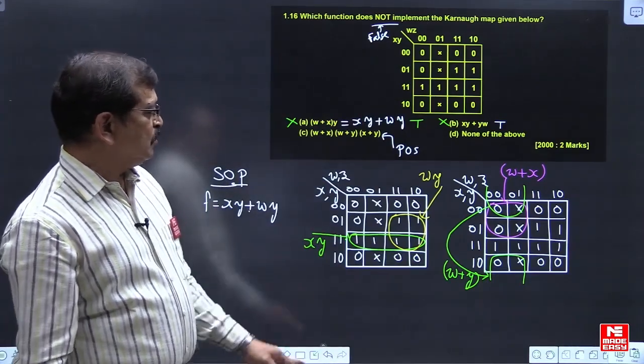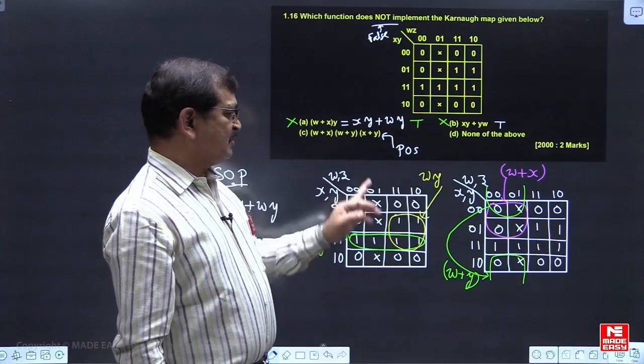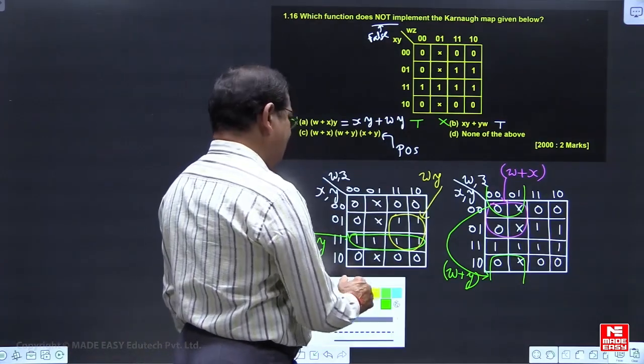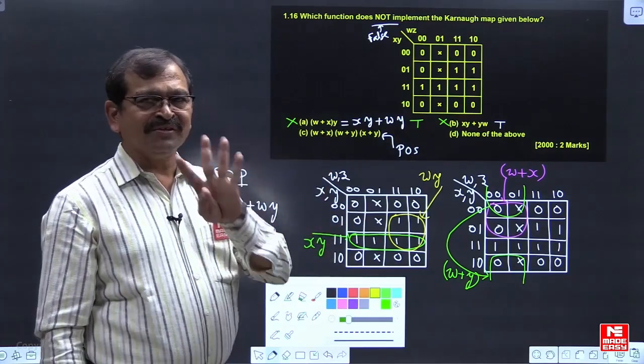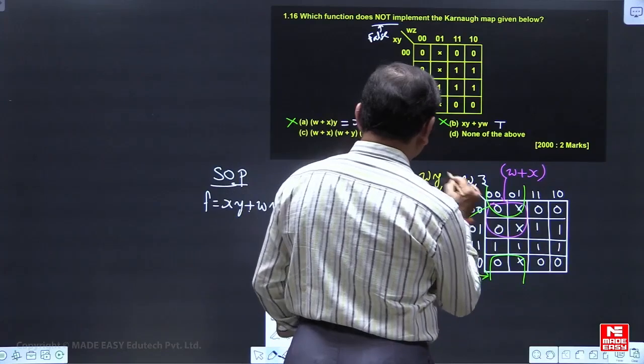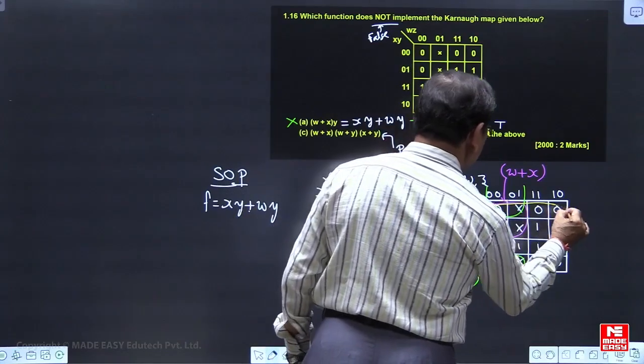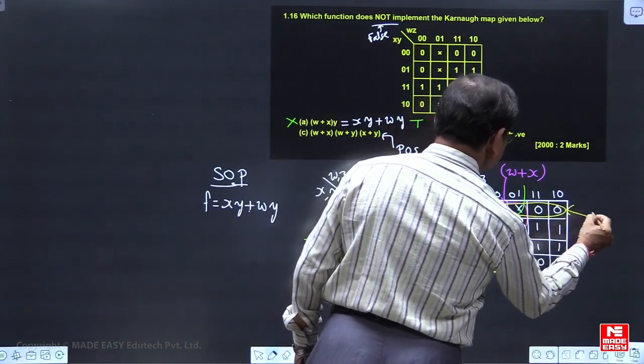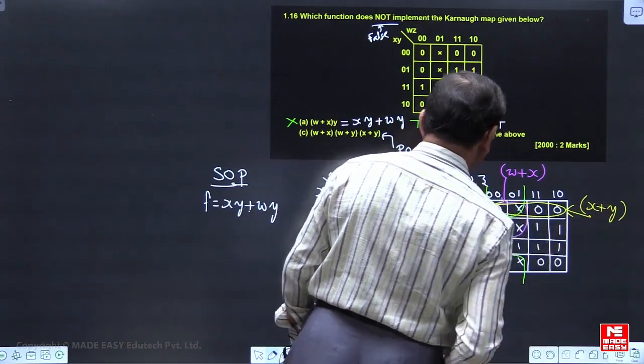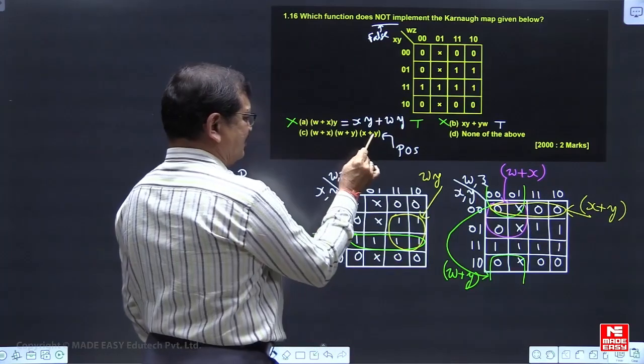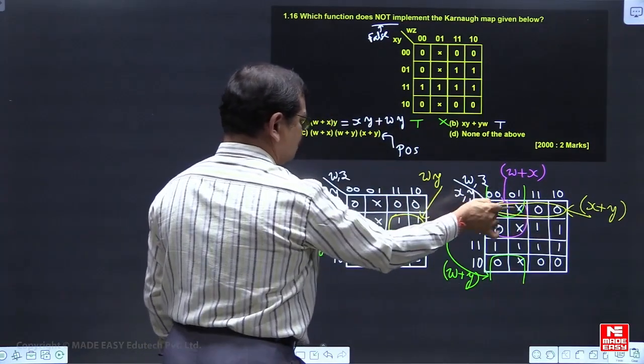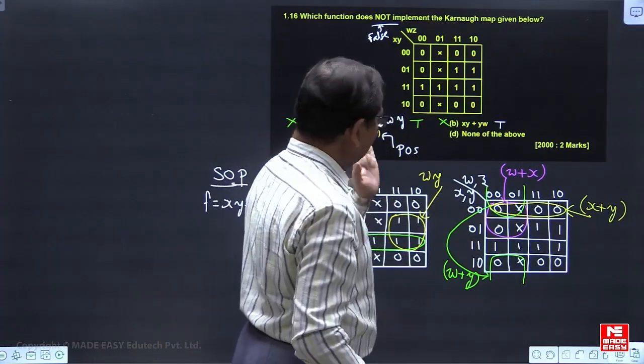Now next come to other term. It is X bar OR Y bar. So X bar OR Y bar, where are you getting? X bar OR Y bar also with a group of 4 cells. Four cell group needs to be made. Which 4 cells? X and Y both supposed to be 0. X and Y both are 0s here. So this is the sum term X bar OR Y bar. So X bar OR Y bar is this. W bar OR Y bar is this. W bar OR X bar is this.